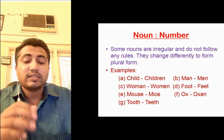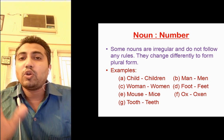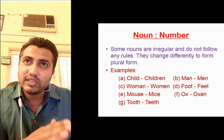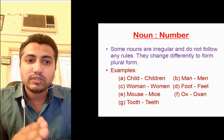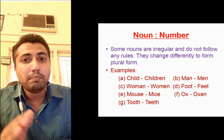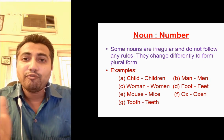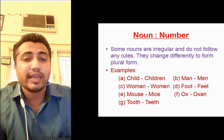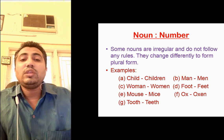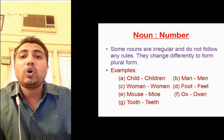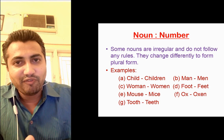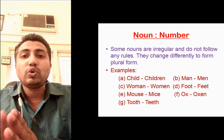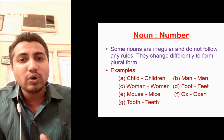The last rule is that there are some nouns which do not follow any rule — they change in a different way. For example: child becomes children, man becomes men, woman becomes women, foot becomes feet, mouse becomes mice, ox becomes oxen, tooth becomes teeth. These are nouns which have no standard rule to change from singular to plural. Students, these were some rules on how to change a noun from singular to plural.